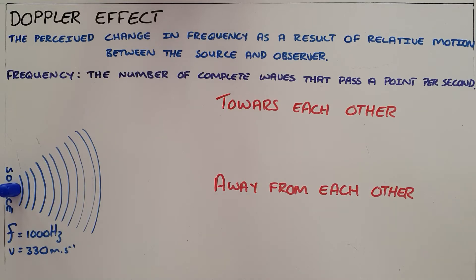The Doppler effect is the perceived change in frequency as a result of relative motion between the source and observer, where frequency is the number of complete waves that pass a point per second.